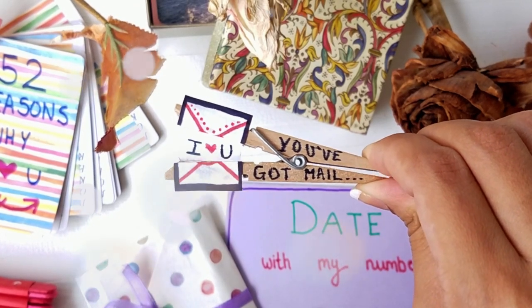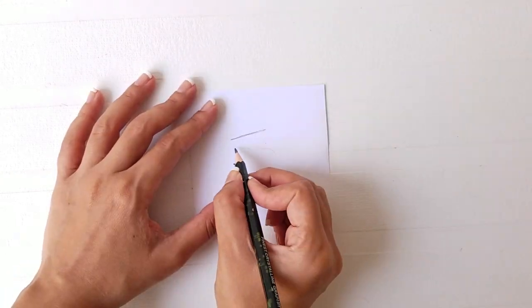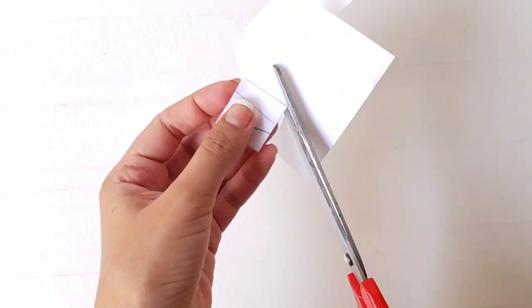In order to create this clothespin message, pinch the ends together and trace the opening on a blank piece of paper. Create a rectangle around it and cut along the lines.